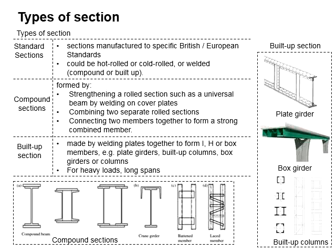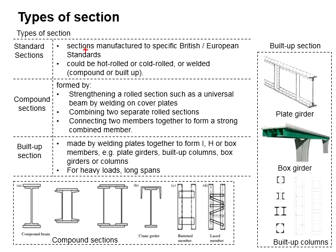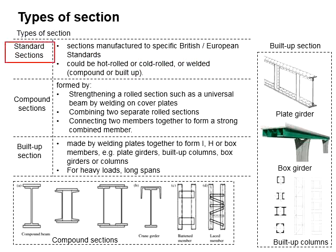There are three main types of steel sections for structural usage: standard sections, compound sections, and build-up sections. Standard sections are sections manufactured to specific British or European standards, which can be in the form of hot-rolled or welded sections. These sections have standardized dimensions and shapes, are easily available from the market, and are the most common sections used in the industry for normal applications.